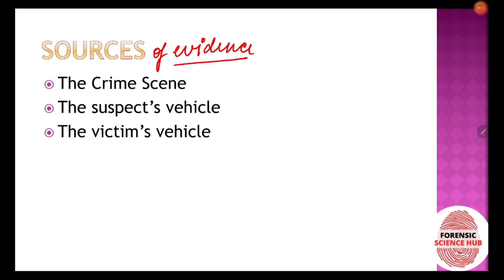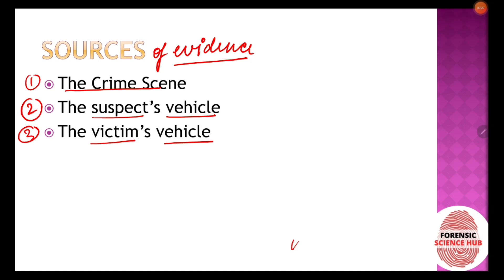Regarding the sources of evidence, there are three main sources. First is the crime scene, where evidence will be present. Second, evidence can be present in the suspect's vehicle. Third, it can also be present in the victim's vehicle. All three places need to be searched in order to find the evidence.